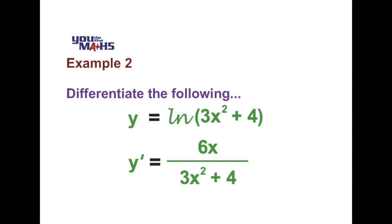And its derivative, in other words the derivative of 3x squared plus 4, is 6x. And that goes to the numerator of our derivative.